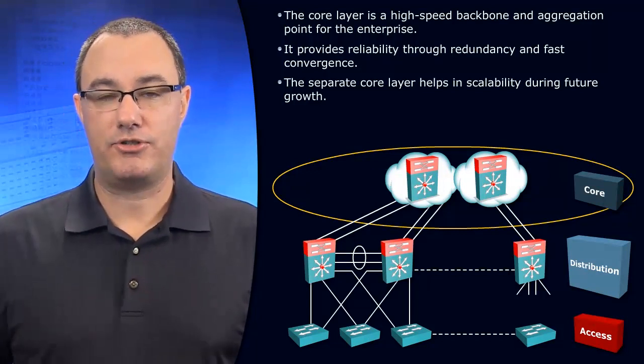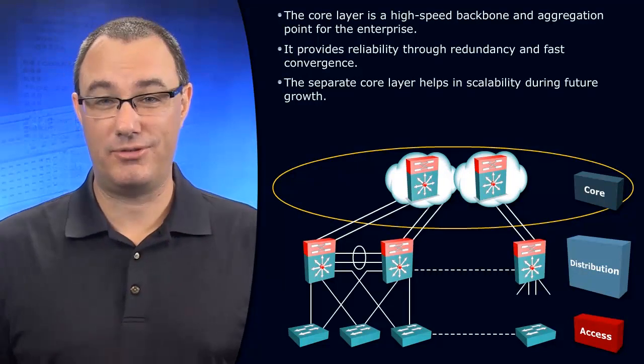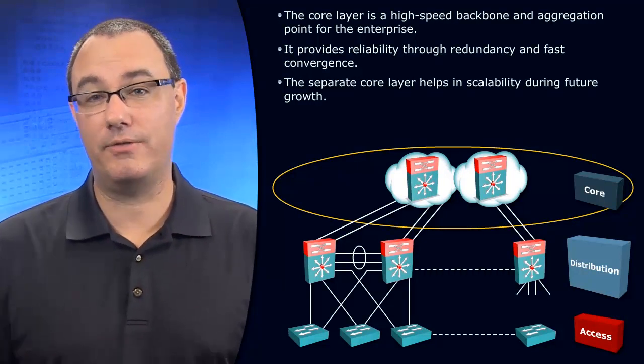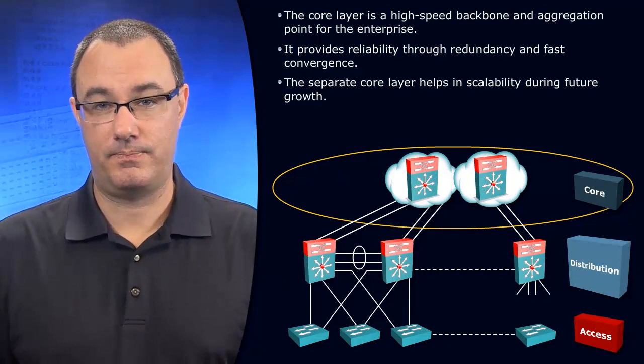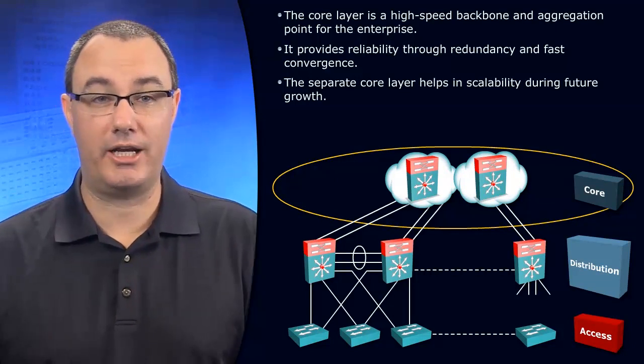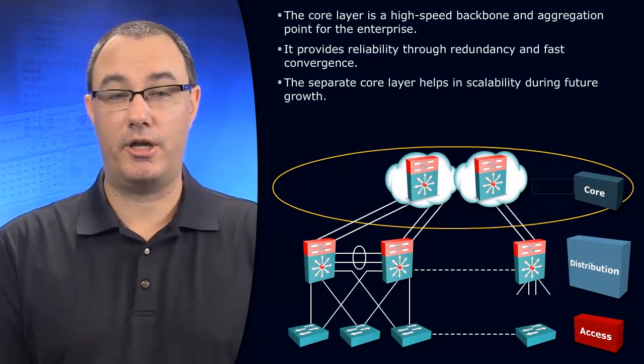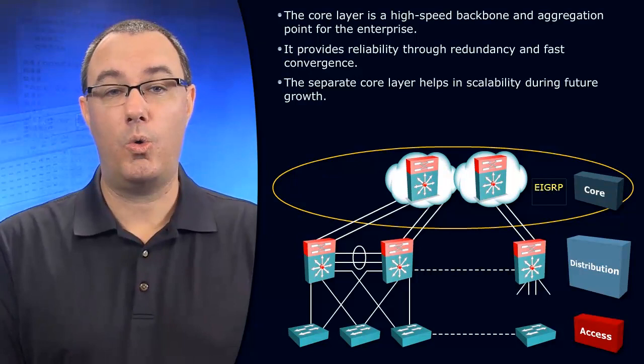Let's talk again about convergence time. If it was layer two switches, we're talking layer three switches. What's a layer three convergence technology? Routing protocols. That's the answer. So we're going to be running a routing protocol. What routing protocol do you run? Do you run EIGRP or OSPF?